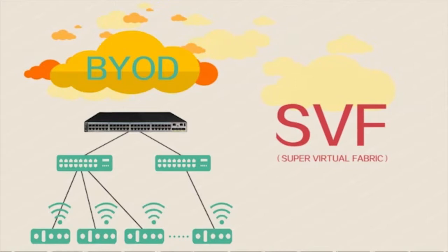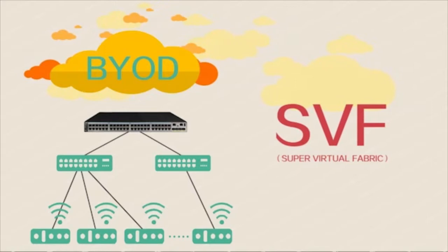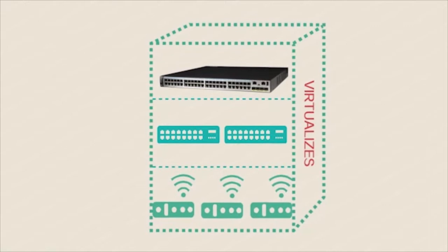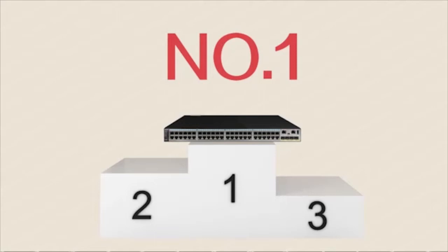In BYOD, IT maintenance personnel have to repeatedly configure and maintain a large number of network devices. S5720HI provides the Super Virtual Fabric function, which virtualizes wireless access points into ports and virtualizes access switches into its extended cards. The SVF function manages the entire campus network like one device. This significantly improves work efficiency of IT maintenance personnel.